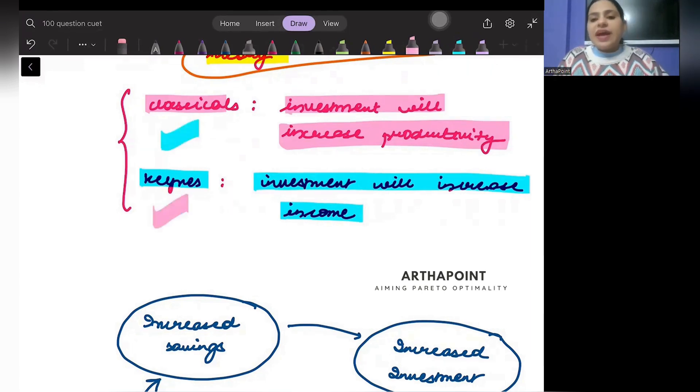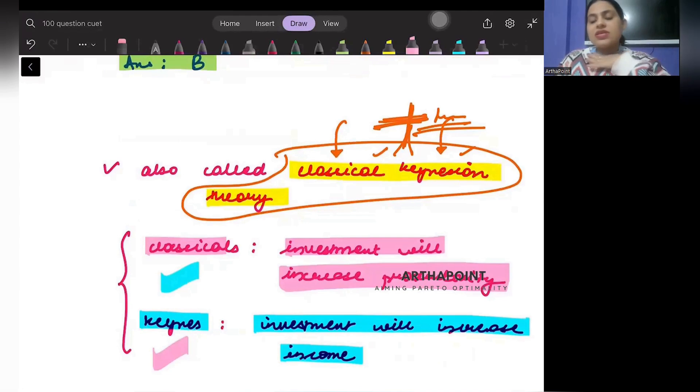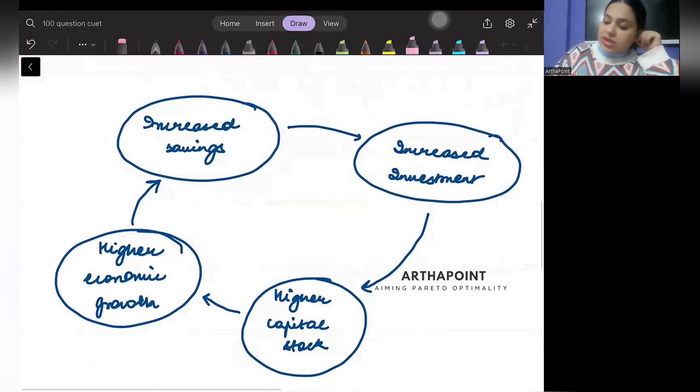Harrod-Domar just went ahead and mixed the two things together and therefore it is also known as classical Keynesian theory. Now the Harrod-Domar model has a chain - one after another and it continues forever.